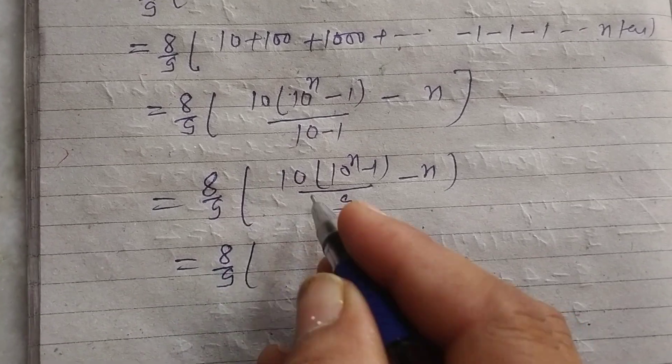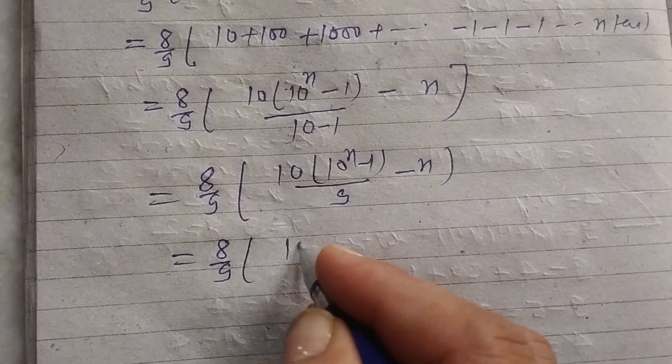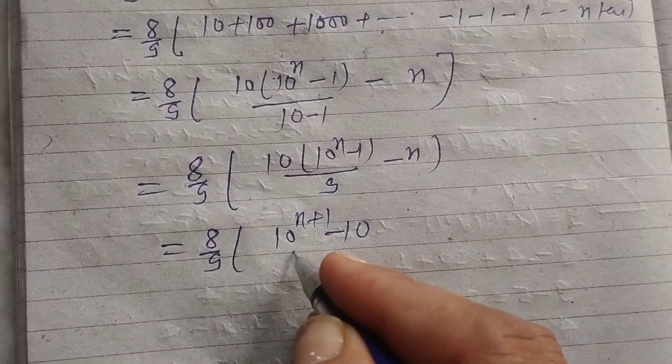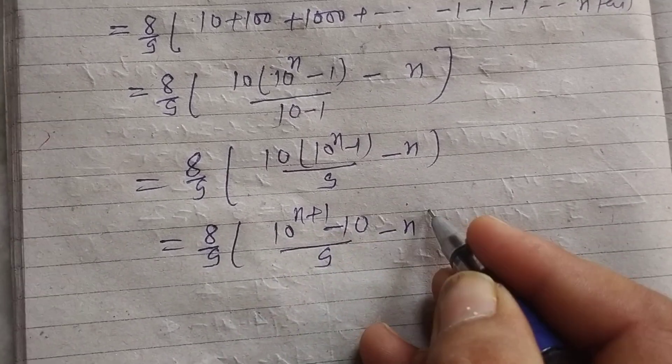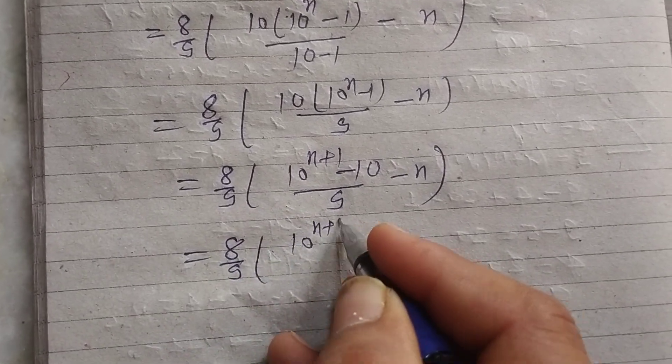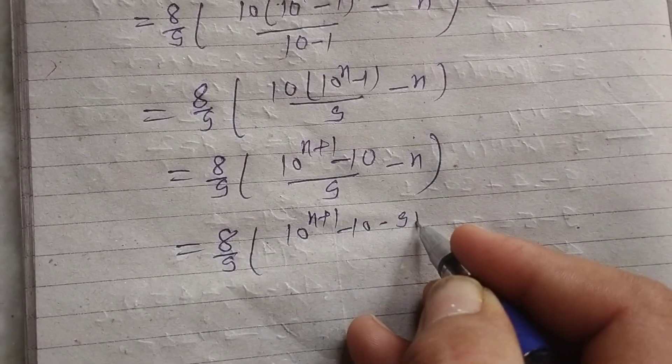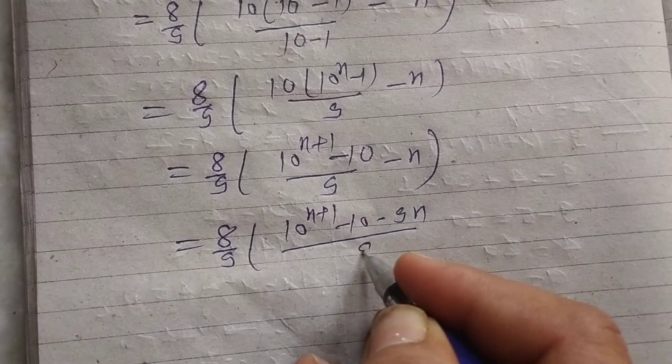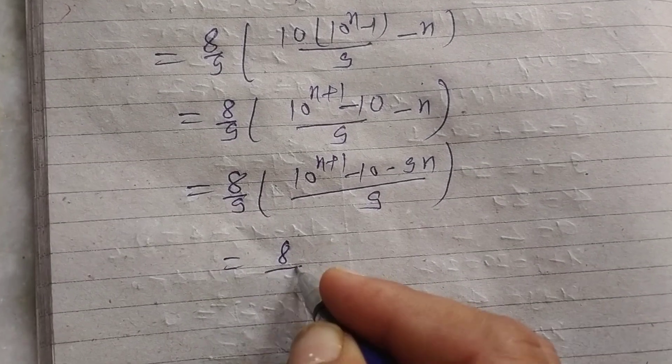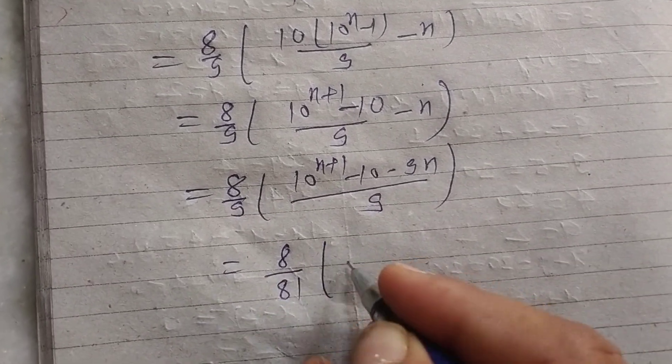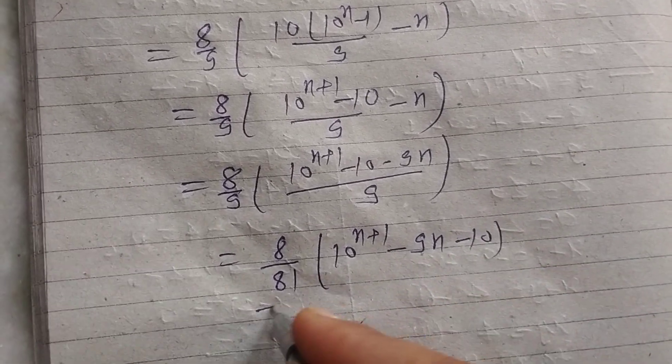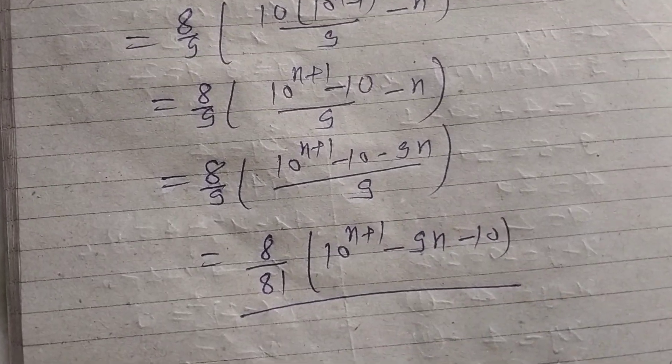So 8 upon 9, 10 to the power n plus 1 minus 10 minus 9n upon 9. We multiply by 9, we get 8 upon 81, 10 to the power n plus 1 minus 9n minus 10. This is the answer of this question.